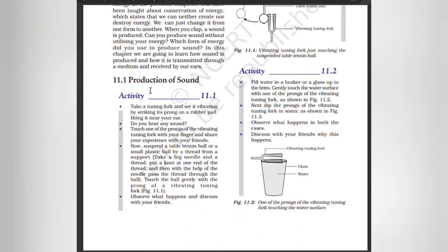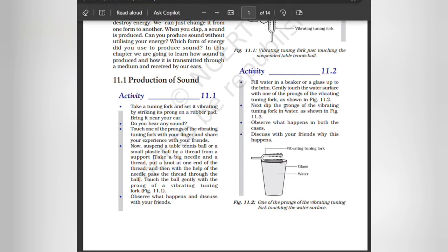Production of sound: Take a tuning fork and set it vibrating by striking its prong on a rubber pad. Bring it near your ear. Do you hear any sound? Touch one of the prongs of the vibrating tuning fork with your finger and share your experience with your friends. Now suspend a table tennis ball or a small plastic ball by a thread from a support. Take a big needle and thread, put a knot at one end, and with the help of the needle pass the thread through the ball. Tap the ball gently with the prong of a vibrating tuning fork. Observe what happens and discuss with your friends.